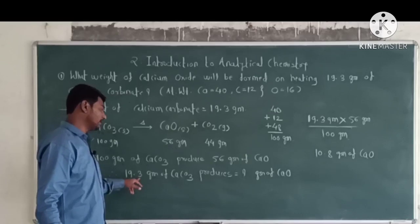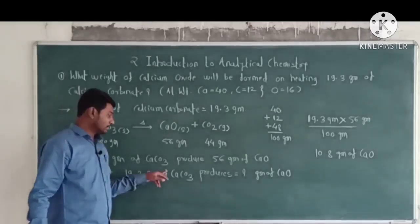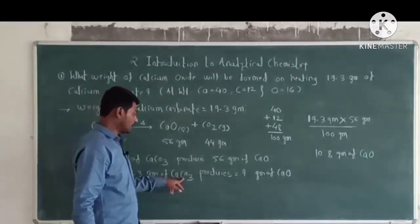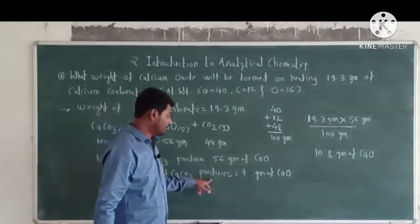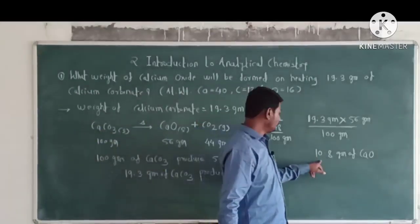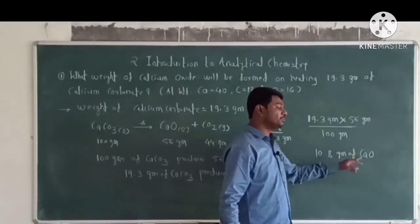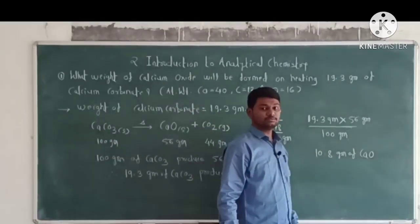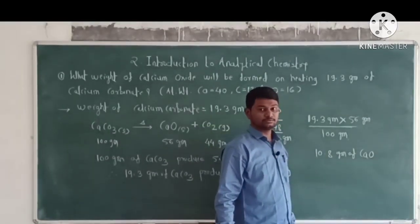Therefore, 19.3 grams of calcium carbonate produces 10.8 grams of calcium oxide.